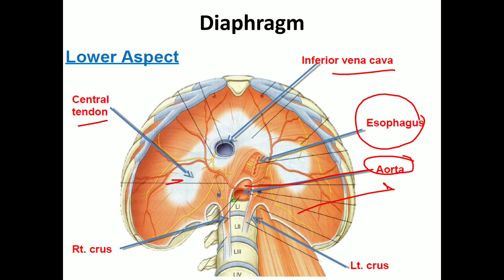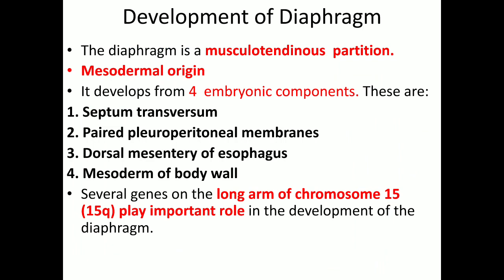Here you can see the two crura. The diaphragm is mesodermal in origin and it develops from four embryonic components. There is also an important role of the long arm of chromosome 15, which carries genes involved in the development of the diaphragm.